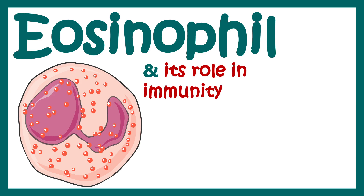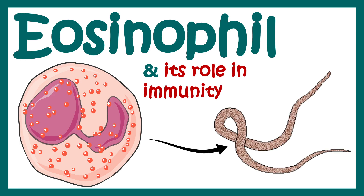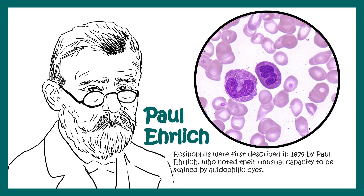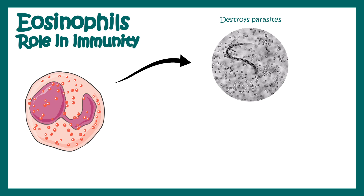In this video we'll talk about Eosinophil and its role in immunity. Eosinophil plays a vital role in terms of immunity against parasites. It was first discovered and described by Paul Ehrlich in 1879, and he noticed the unusual capacity of this cell to be stained with acidophilic dyes. They play a vital role against parasites and they're involved in modulating allergic response.